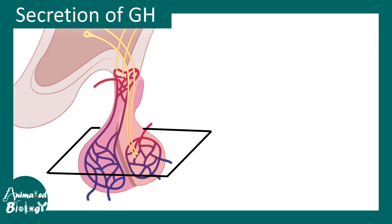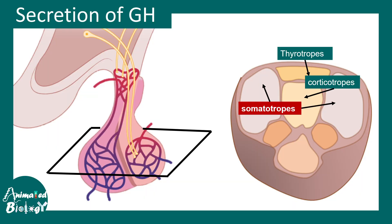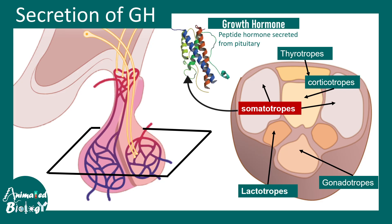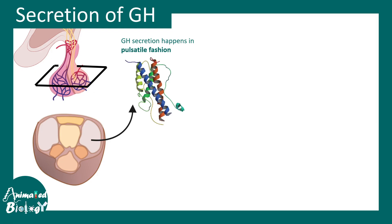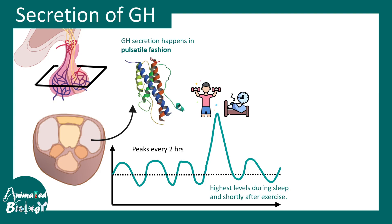If we cut a cross section of the anterior pituitary we would see zones including thyrotropes, somatotropes, corticotropes, lactotropes, and gonadotropes. Among these, somatotropes — shown in red — are the region that secretes growth hormone. Growth hormone is a peptide-type hormone secreted from the pituitary. Its secretion happens in a pulsatile fashion, with pulses peaking every two hours and a large peak occurring when we exercise or just after we fall asleep.